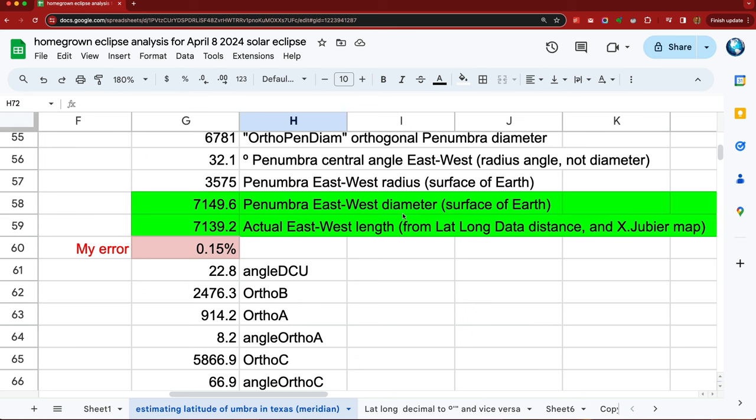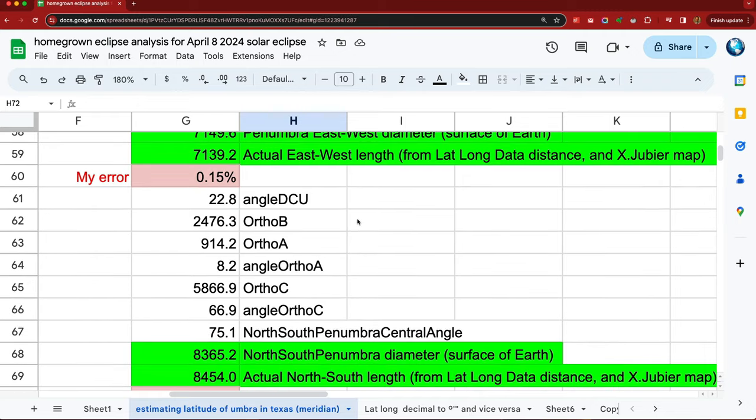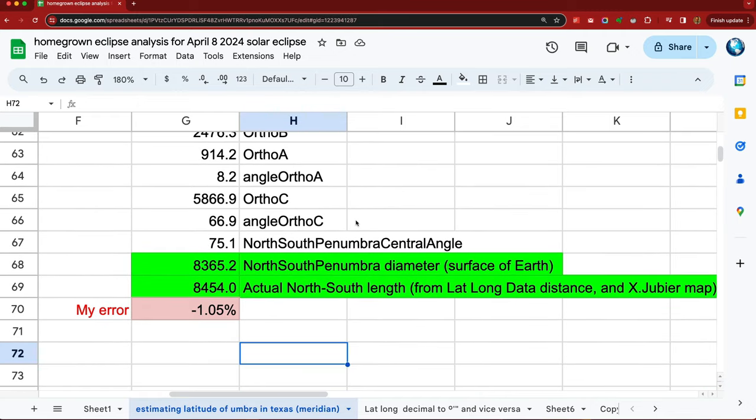The penumbra. The size of the penumbra. This was some of the hardest calculations. East-west size of the penumbra. And the north-south size of the penumbra. That was really, really hard to get to.